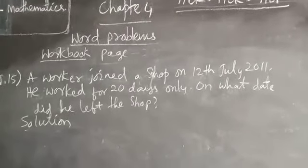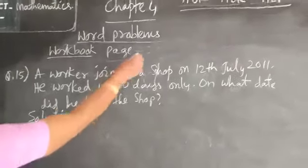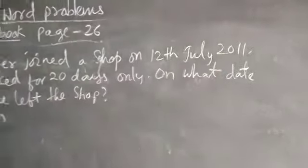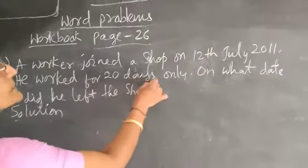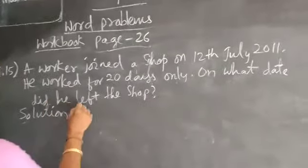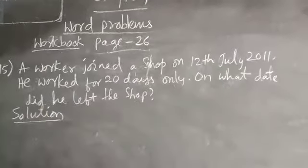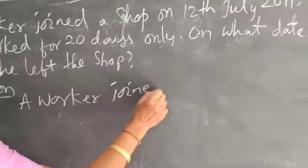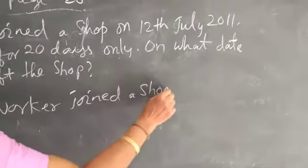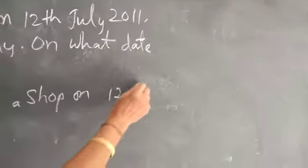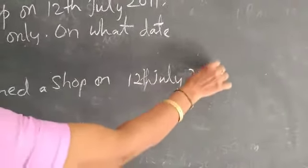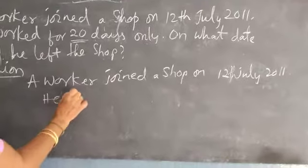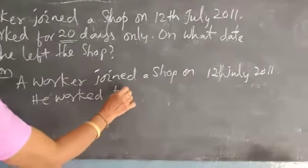Next, question number 15, same page. A worker joined a shop on 12th July 2011. He worked for 20 days only. On what date did he leave the shop? He worked for 20 days.